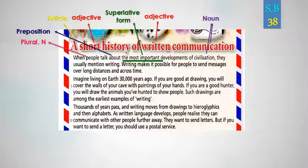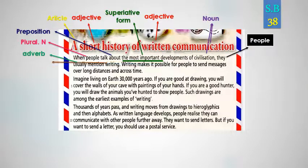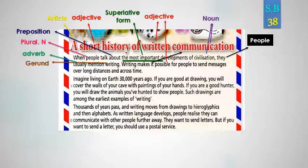They usually mention writing. The pronoun 'they' refers to 'people.' 'Usually' is an adverb. 'Writing' is a gerund — مصدر — a noun ending in -ing. Writing makes it possible for people — للأشخاص — to send messages — لإرسال الرسائل — over long distances — عبر مسافات طويلة — and across time — وعبر الزمان. The pronoun 'it' refers to communication. 'Possible' is an adjective.